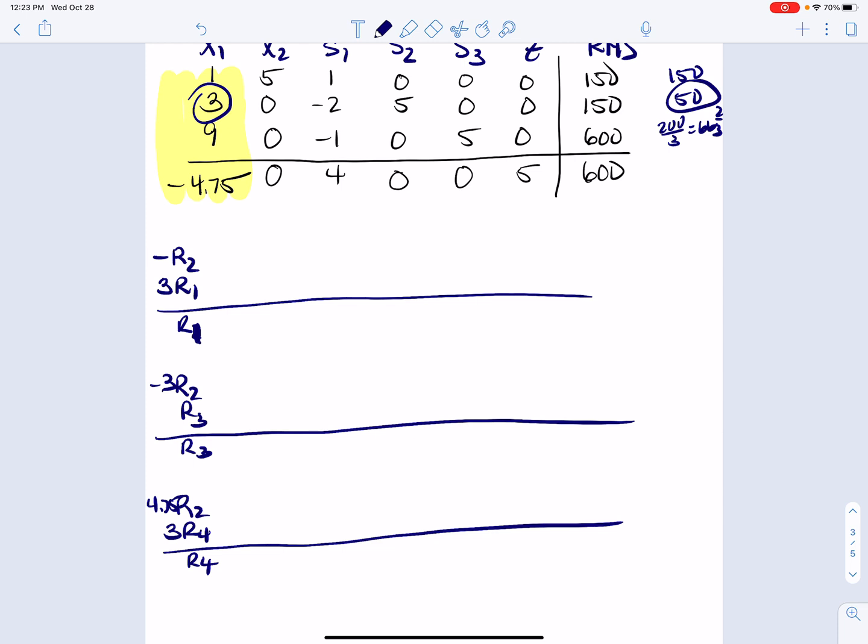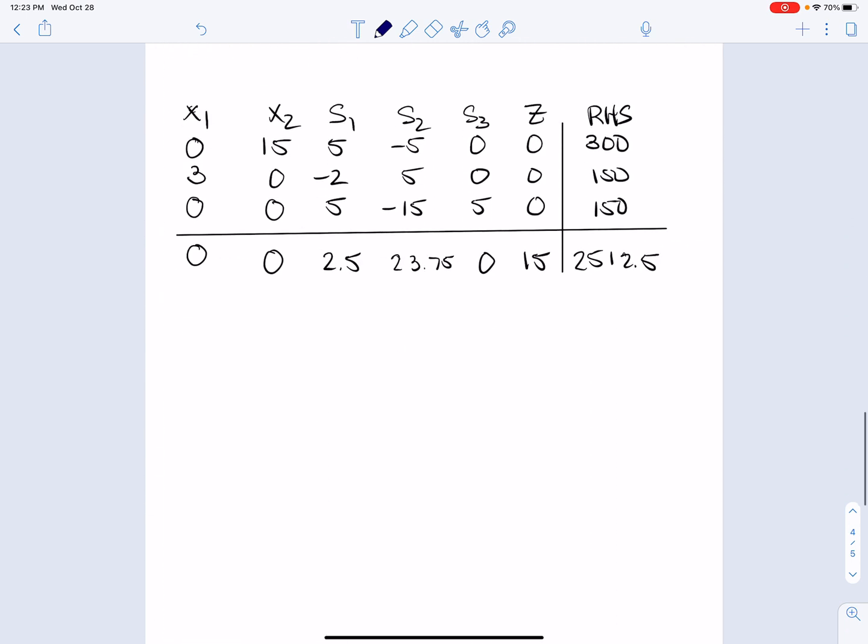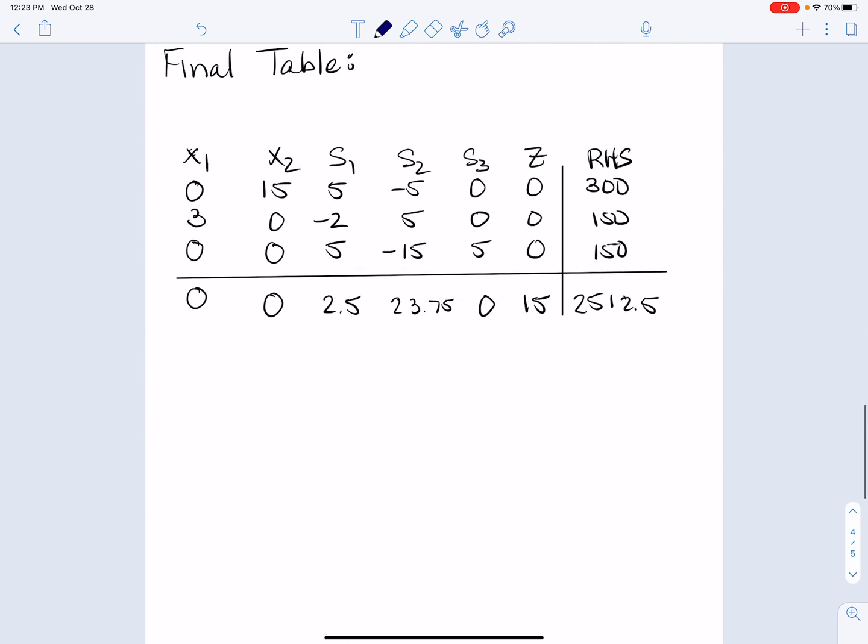So again, I encourage you to pause the video right here, work the problem out. And then when you get back, we'll go to the next tab below. And we're going to see what the solution is there. And here it is. Well, would you look at that? We have reached optimality. Remember, we know we're optimal when the bottom row has no negative entries.